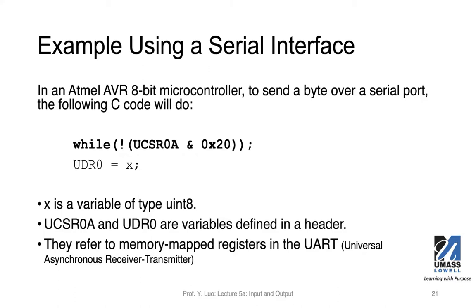Let's look at this example of using polling. We have an Atmel AVR 8-bit microcontroller, and we want to use it to send a byte over a serial port. We can have the following C code. The first line is a while loop. UCSR0A is the control register of the serial port — one of the control registers in that UART controller. We read the value out of this register and do a bitwise AND operation to check a particular bit, which is bit number five counting from zero. That bit tells us whether the transfer register is available.